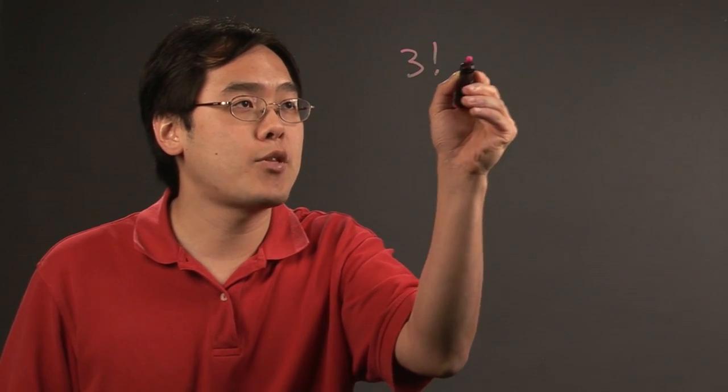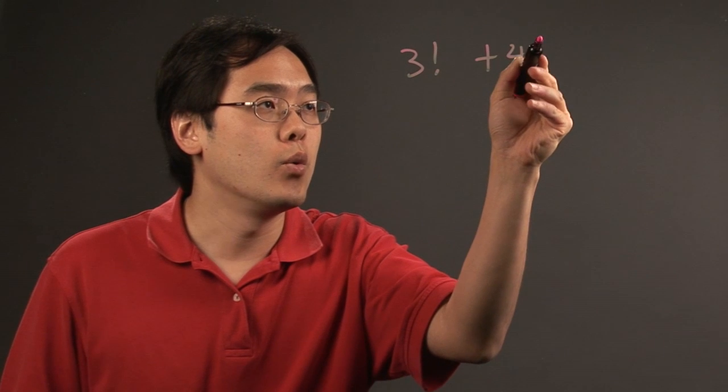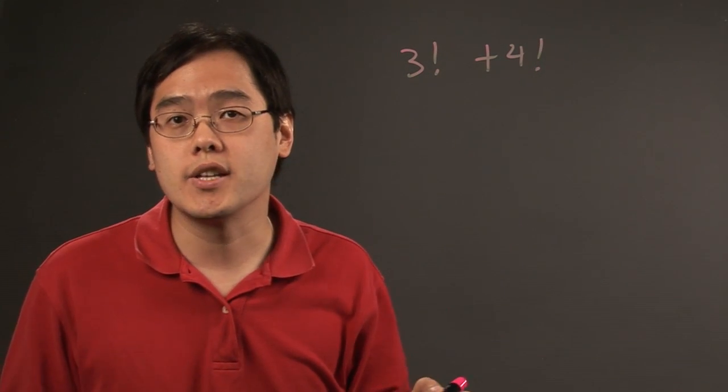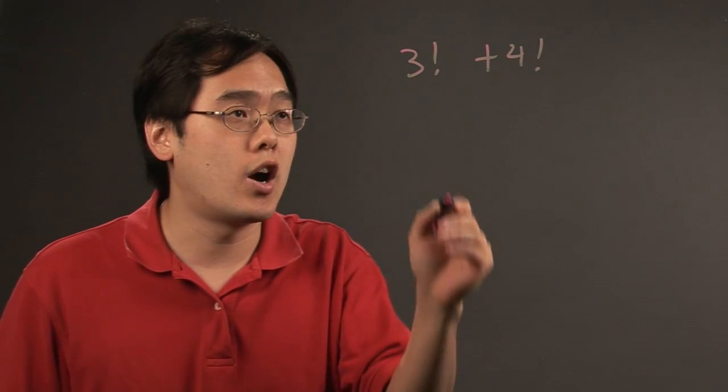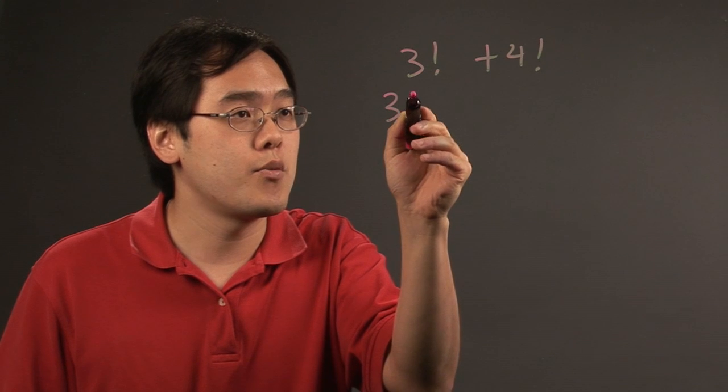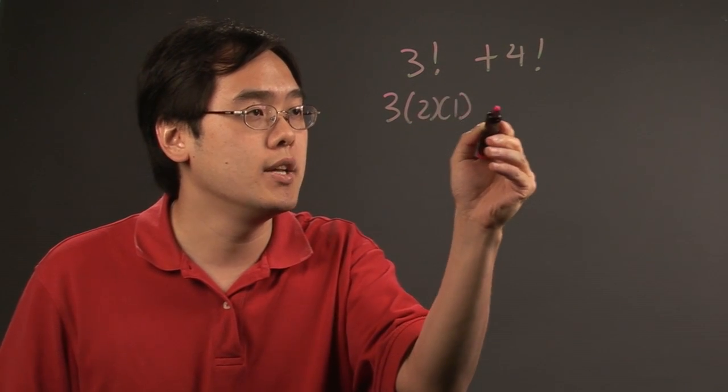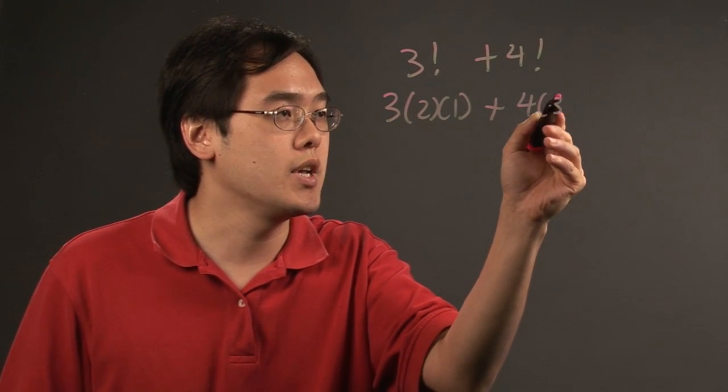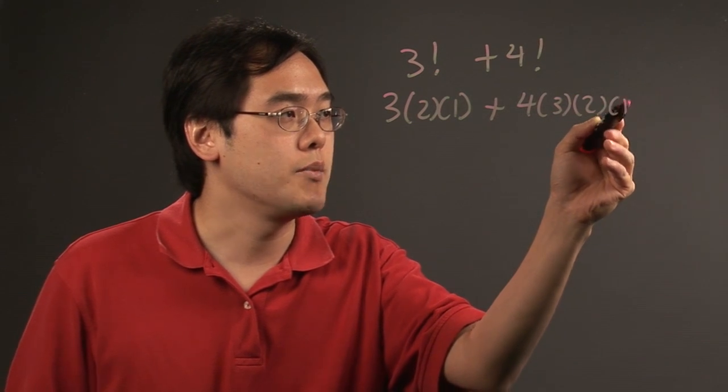For example, if you want to add 3 factorial with 4 factorial, the understanding is you have to figure out what 3 and 4 factorial are. So, 3 factorial is 3 times 2 times 1 and 4 factorial is 4 times 3 times 2 times 1.